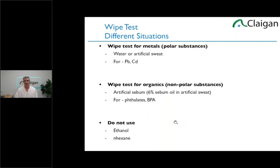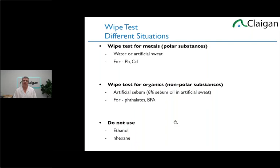However, some people do the wipe test completely wrong. The basic wipe test is really for lead — it's an EPA test. Lead, or artificial sweat (which is essentially water), is really good for metals because metals are polar and water is polar — like likes like. A water wipe test is really good for standard lead, cadmium, and other polar substances. It is absolutely poor for organics. Organics don't dissolve in water — if you put table salt in water it dissolves, but vegetable oil just sits there. Oils are non-polar. Most organics — phthalates, bisphenol A — are non-polar. Water isn't the right mechanism.